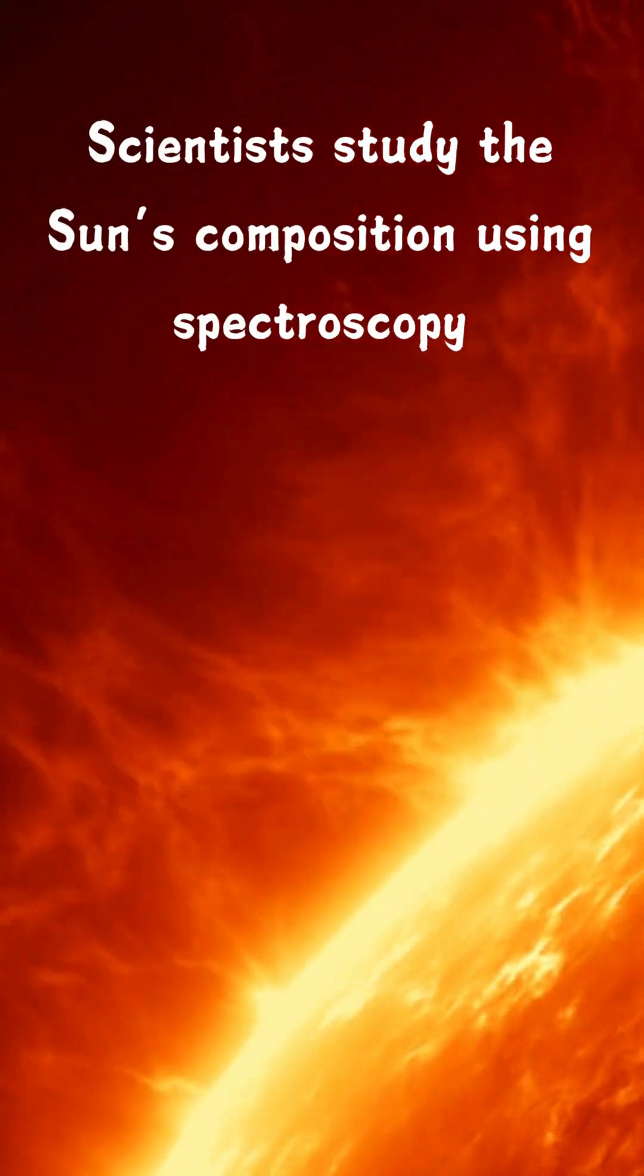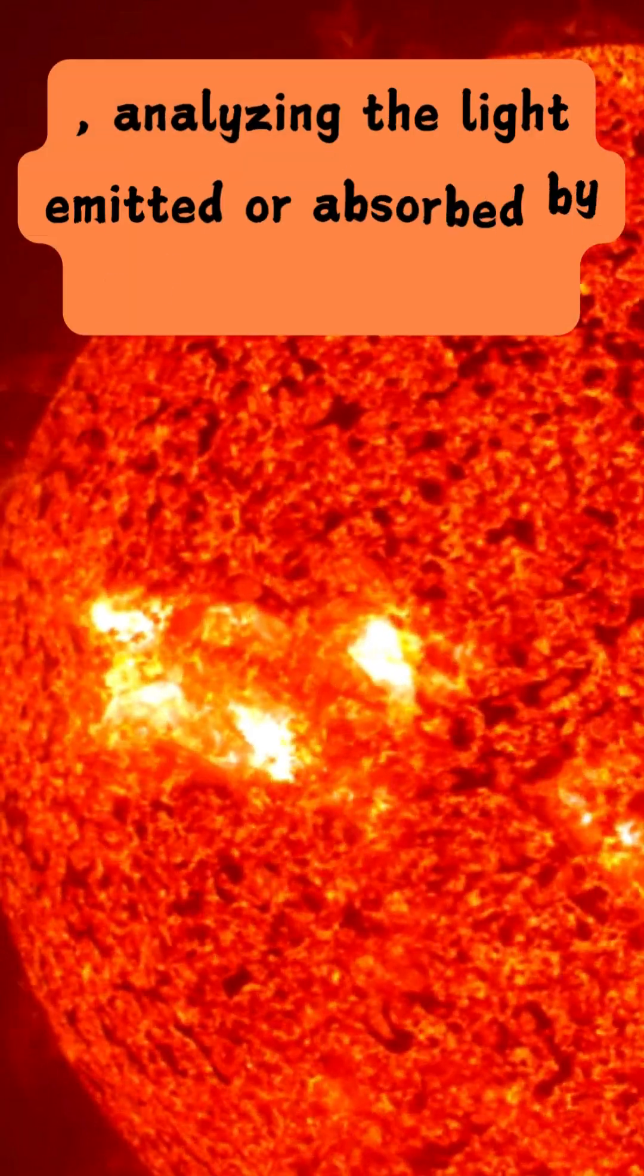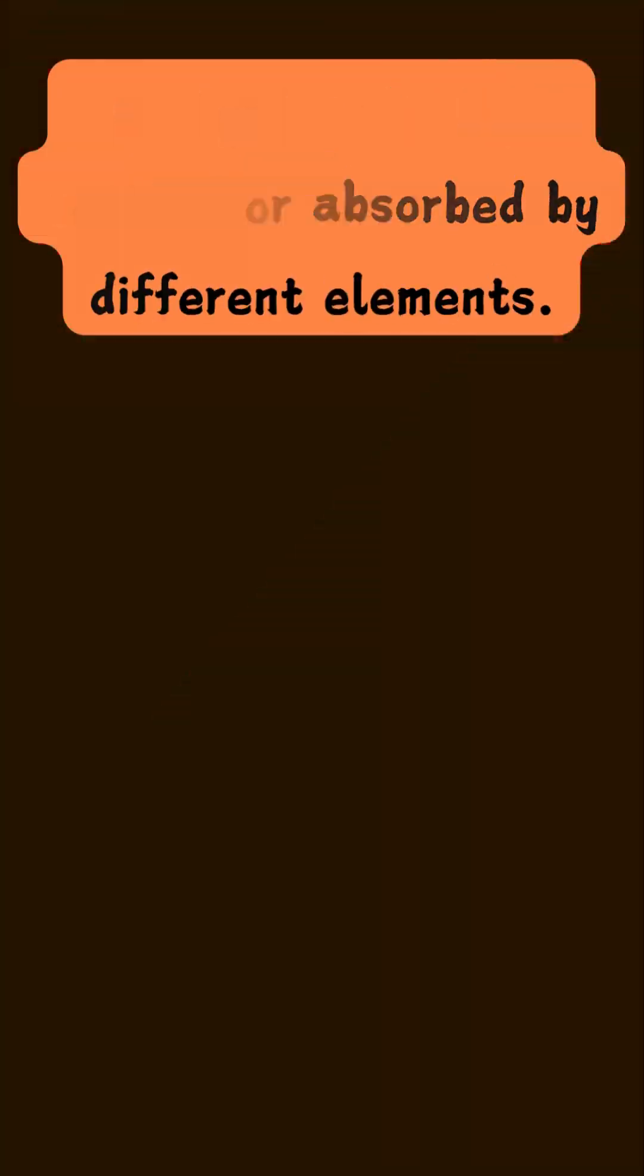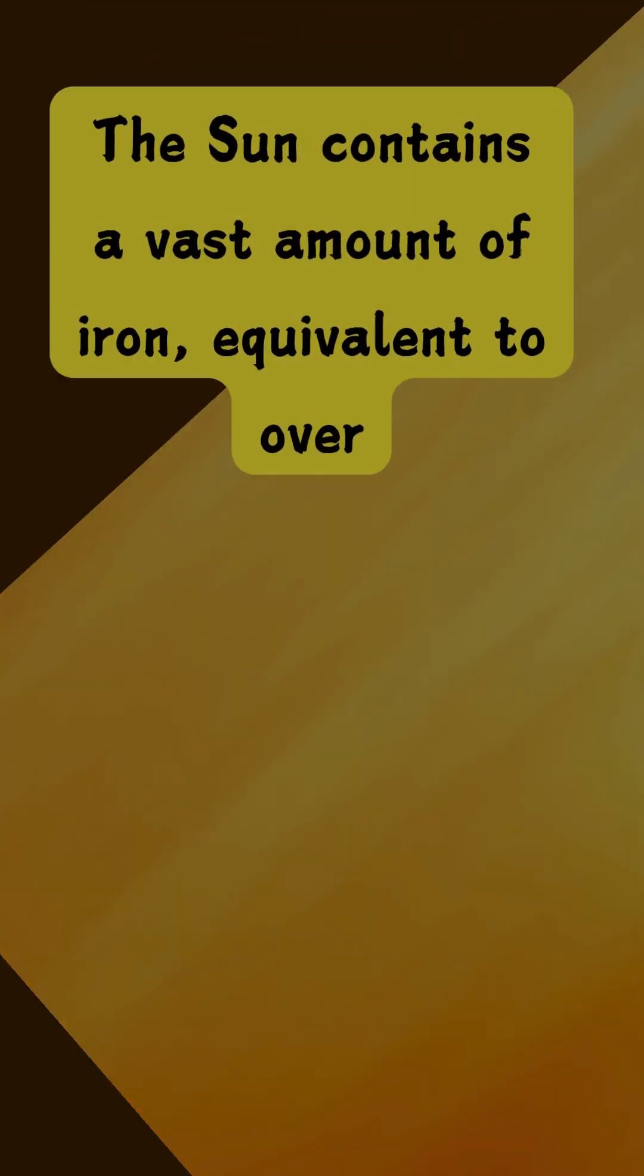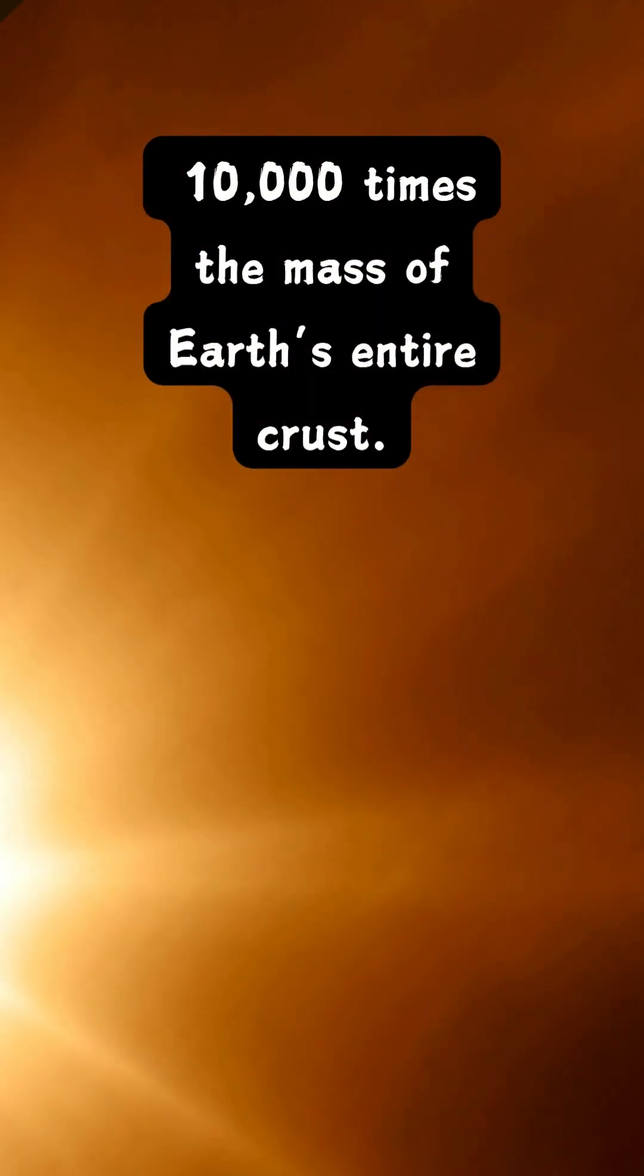Scientists study the Sun's composition using spectroscopy, analyzing the light emitted or absorbed by different elements. The Sun contains a vast amount of iron, equivalent to over 10,000 times the mass of Earth's entire core.